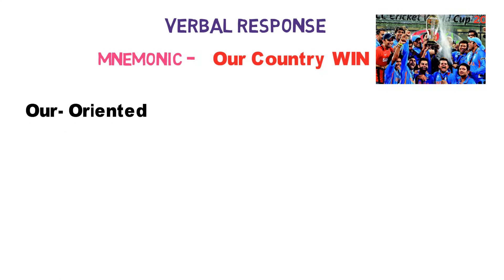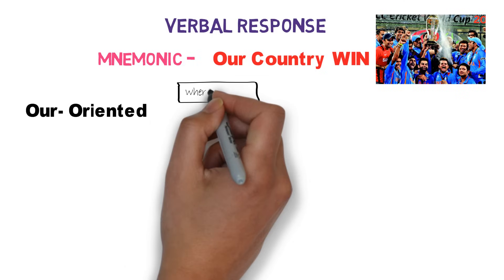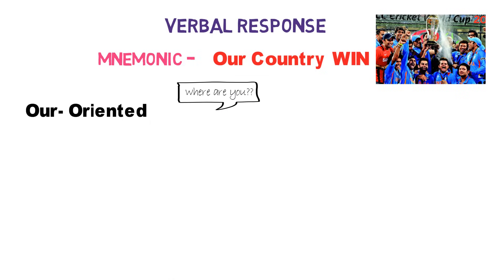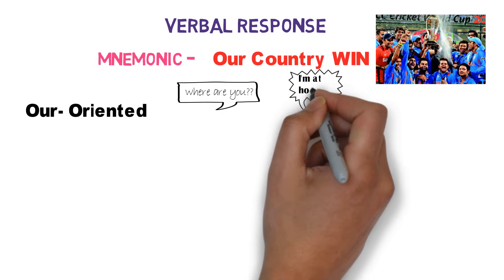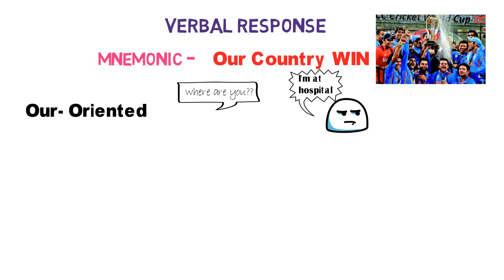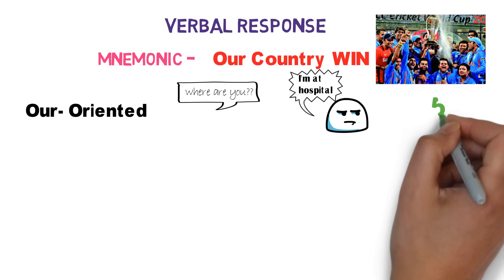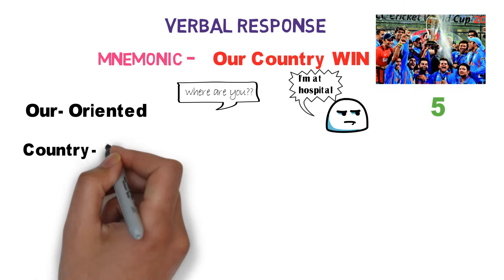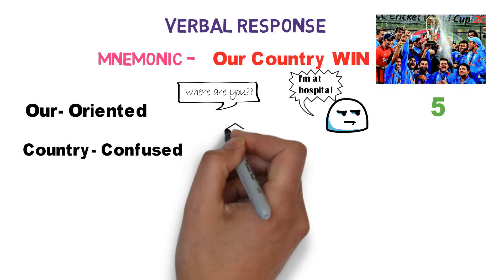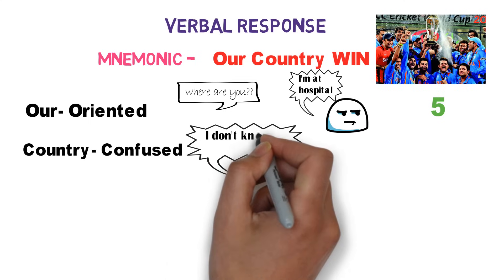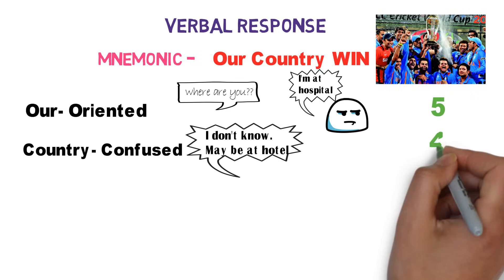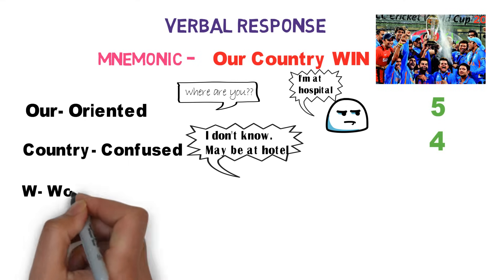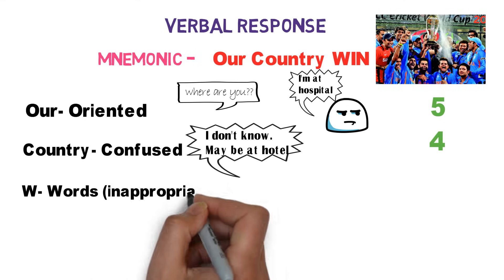O in 'Our' stands for oriented. If you ask the patient where they are and what month it is, and they answer correctly — for example, saying 'I am at the hospital' — the patient is oriented, so the verbal score is 5. C in 'Country' stands for confused. If the patient replies 'I don't know' or says something like 'maybe at a hotel,' they are confused, giving a verbal score of 4.